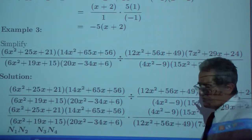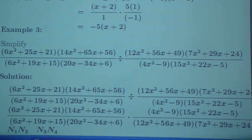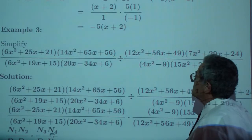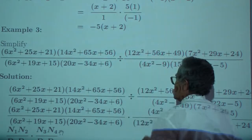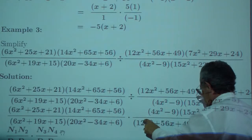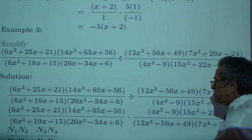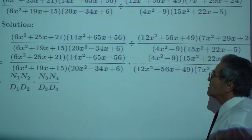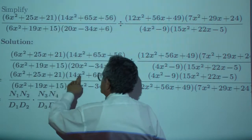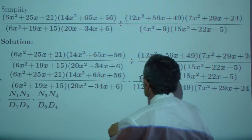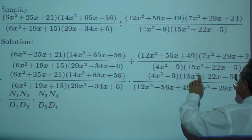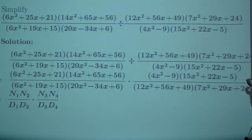And then we wanted to simplify the third example. So you got this product divided by that fraction. And when you divide by fraction, you multiply by the reciprocal of the fraction. So you have numerator 1, numerator 2 over denominator 1, denominator 2 times numerator 3, numerator 4 over denominator 3, denominator 4. And all of these are supposed to be factored.